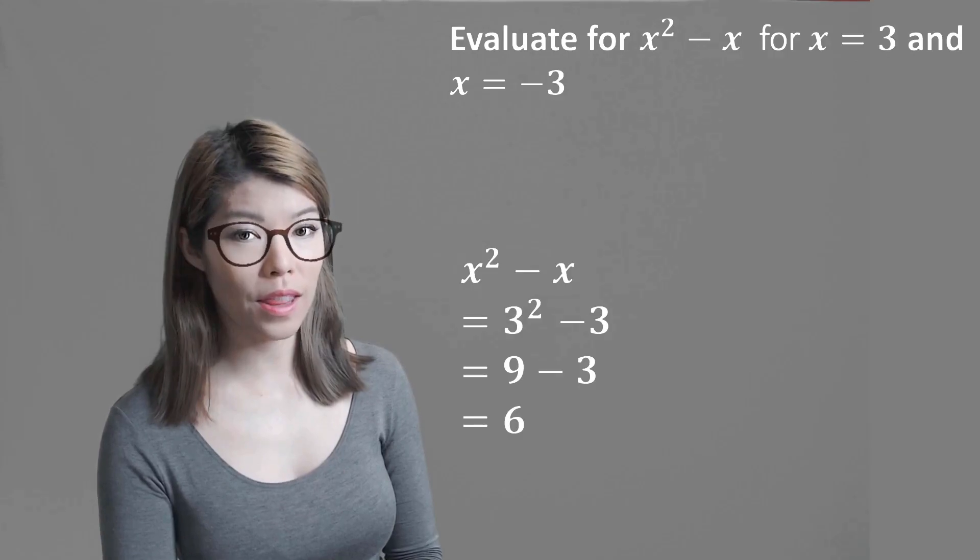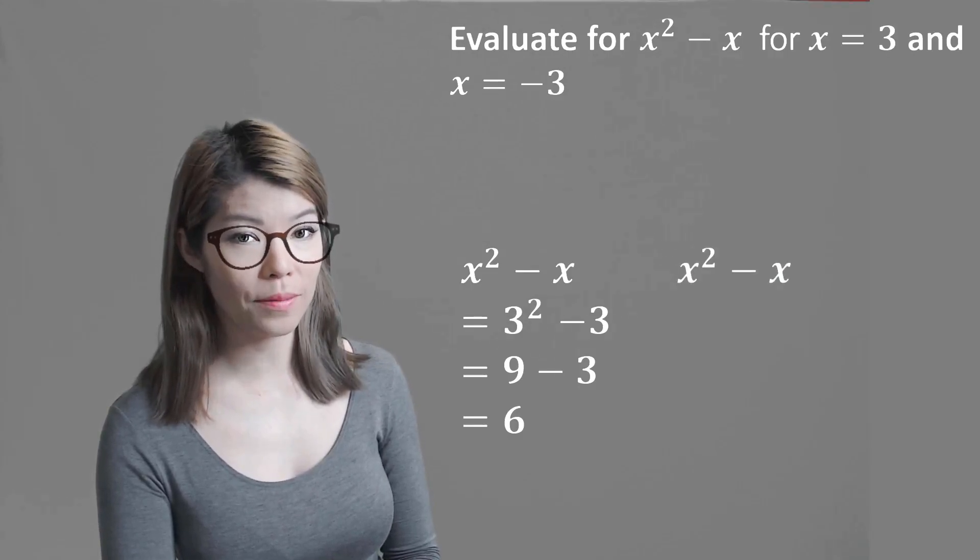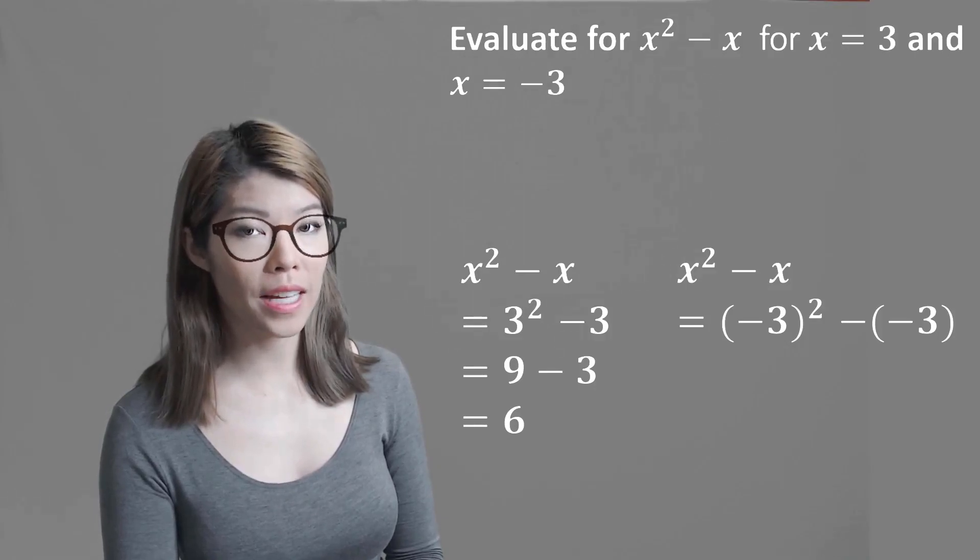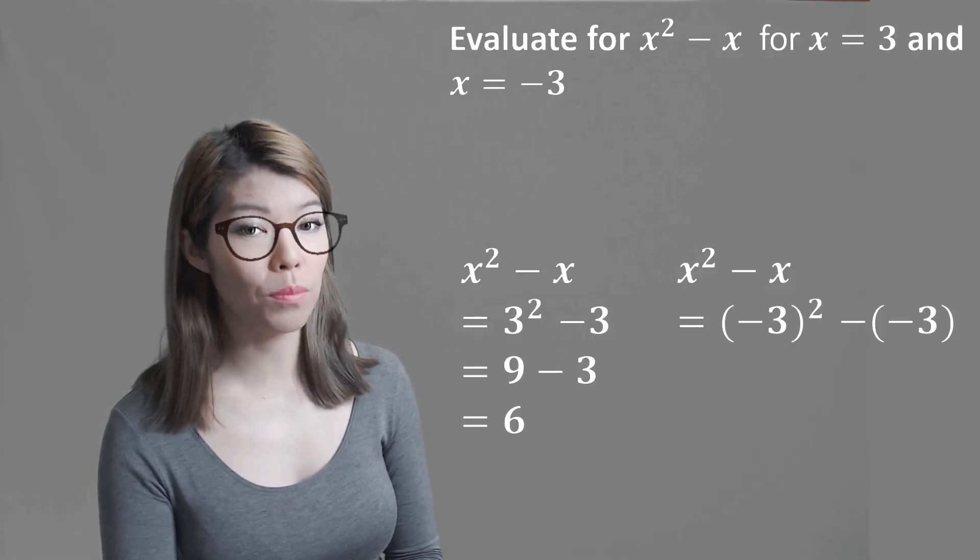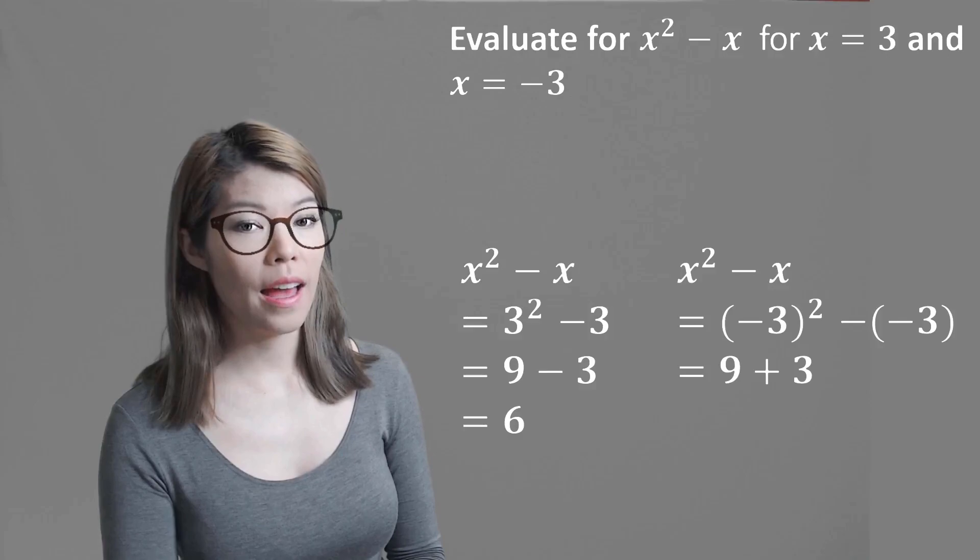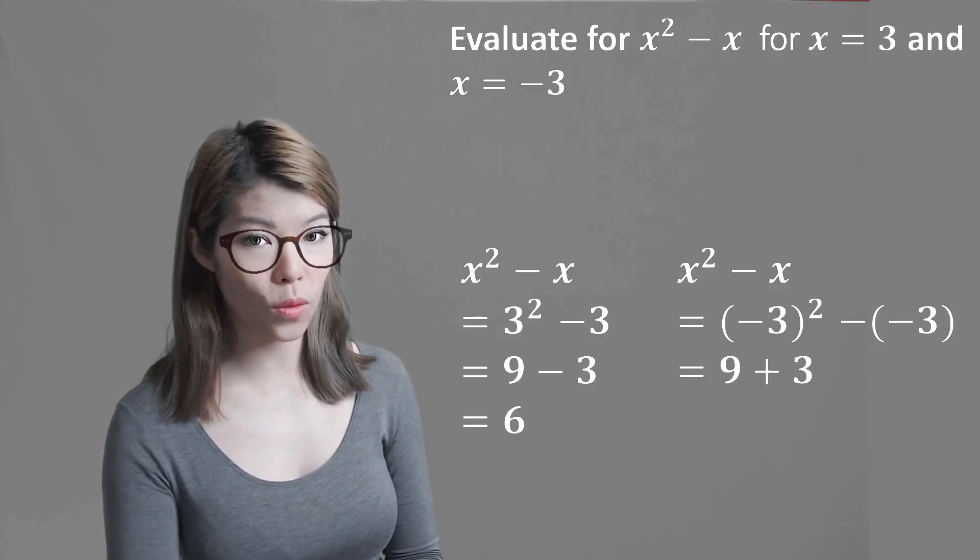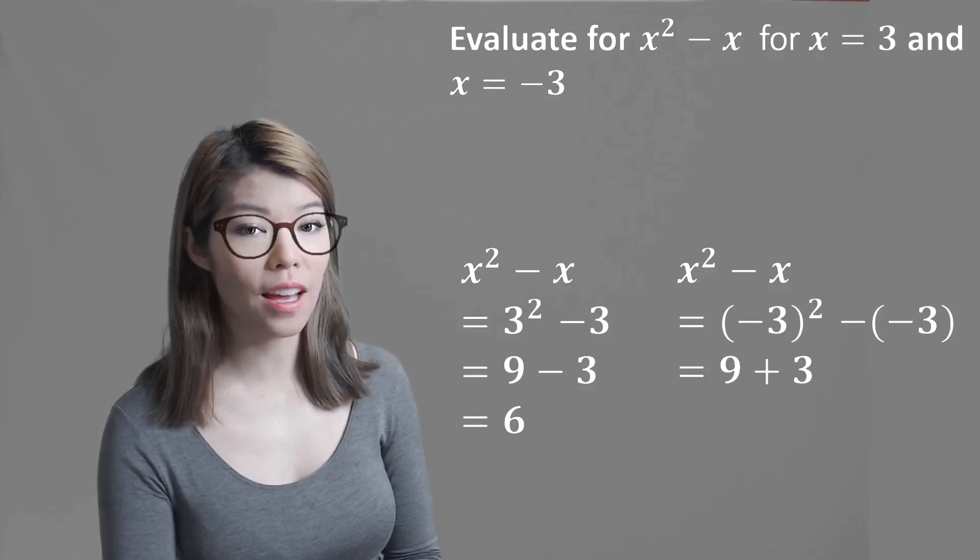Now let's do minus 3. This time we will use brackets like so. So negative 3 squared is negative 3 times negative 3 which is positive 9, and minus minus 3 is positive 3. So we have 9 plus 3 which is 12.